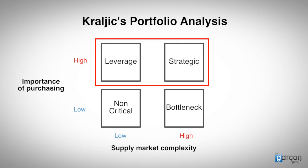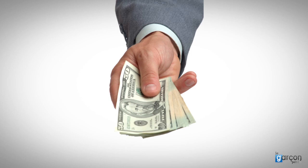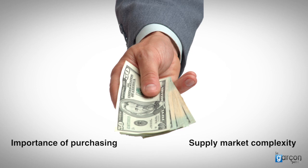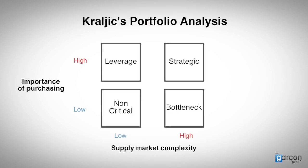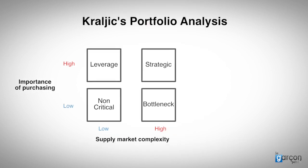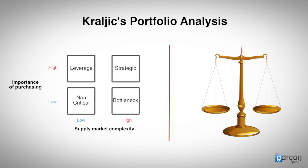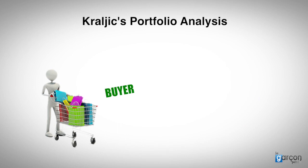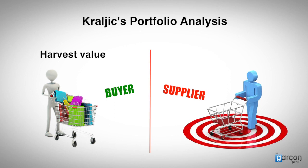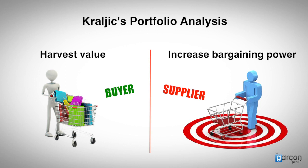First, a reminder of the basic model. The spend portfolio is dimensioned by two variables: the importance of purchasing and the complexity of the supply market. Specific strategies are developed for the categories in each quadrant, based on an understanding of the balance of power between the buyer and the supply market. Where the buyer has market power, strategies are designed to harvest value for the buyer. When the supplier has market power, strategies are designed to change the market dynamics and increase the buyer's bargaining power.